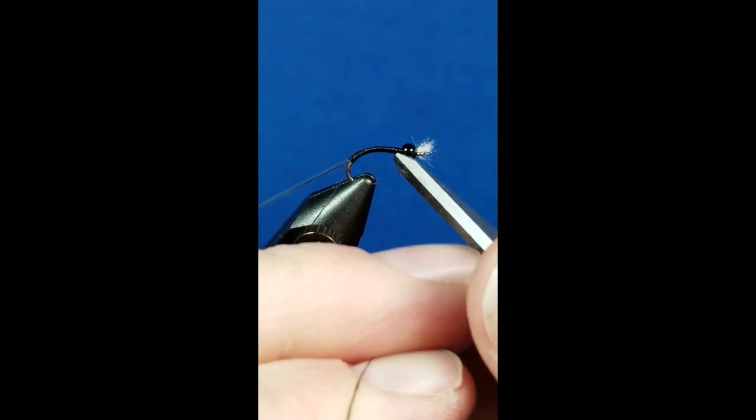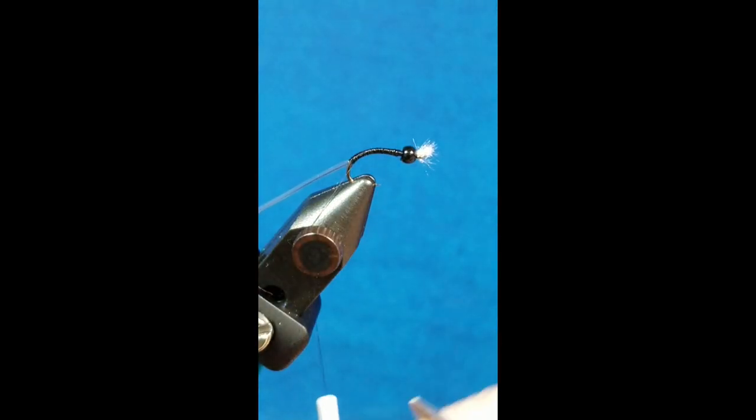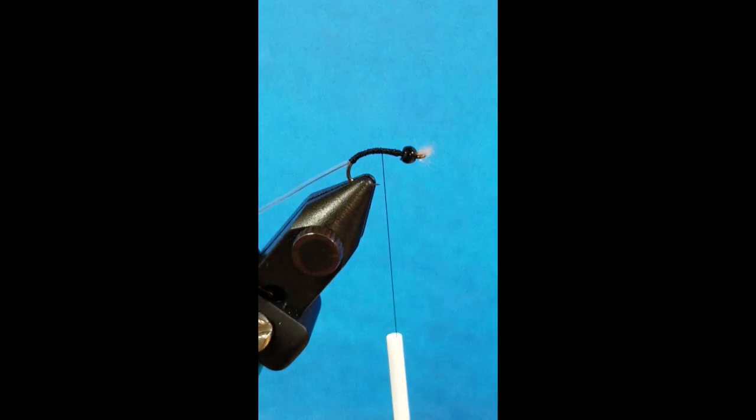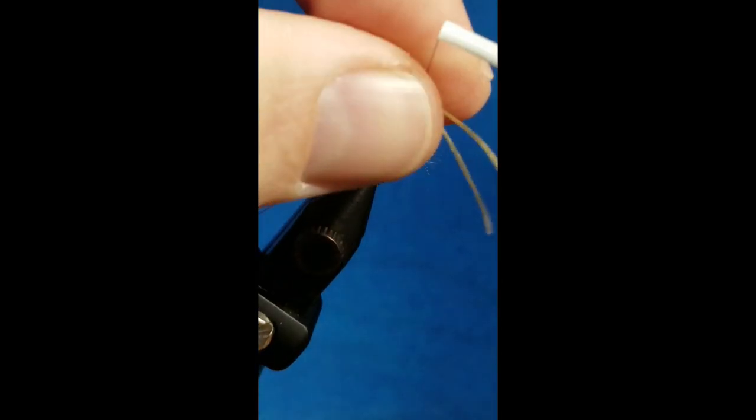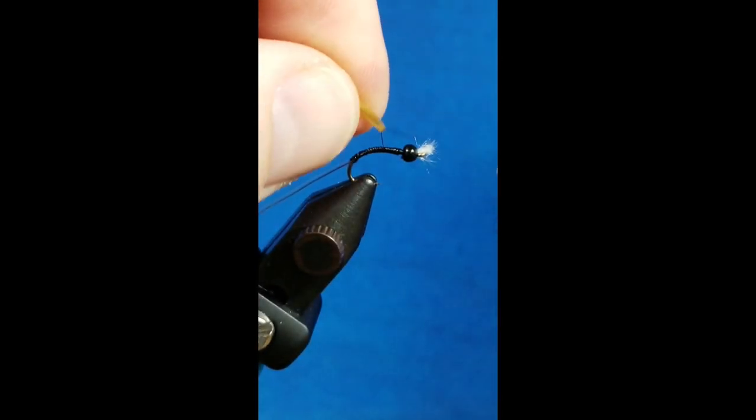I want to take really wide wraps up to about the hook point. Then my wing buds for this pattern, we're going to bring in two strands of tan sexy floss, and I like to take it and just cut it at about an inch. That tends to be a little bit easier for my fingers to work with. I'm going to take it, fold it over the thread, slide it on top of the hook shank.